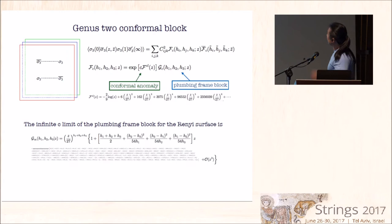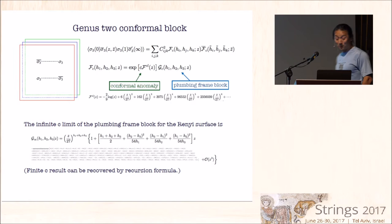The genus two conformal blocks in this rainy frame for the rainy surface parametrized by the modulus Z depends on the three internal weights. This first exponential factor is a semi-classical block. It can also be understood in terms of conformal anomaly. This other factor is what I previously called a plumbing frame conformal block. It has a property that its infinite C limit is finite. The infinite C limit of this guy here, I can give a formula. This can be obtained by direct computation using Mathematica. You can't really read this, but just to show you that there's some long expression you can write down. You can go to higher order if you look at our paper. And the finite C results can be recovered from the recursion formula which we have also verified by direct computation summing over Virasoro descendants.